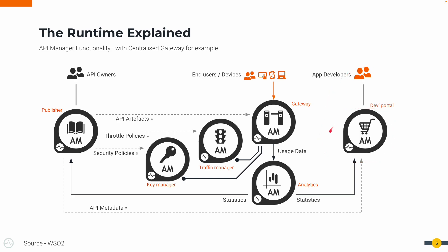Application developers will come to the Developer Portal, see the published APIs, go through them, pick the relevant ones, try them out, and finally integrate the API with their application. Once the APIs are integrated with the application, end users will start consuming the API — requests will come to the Gateway. The Gateway will talk to the Key Manager to see whether it's a valid request and whether the request carries a valid token. Once the security conditions are checked, it will consult the Traffic Manager to see whether it's violating any throttling policies. If all is good, it will send the request all the way to the backend, at the same time publishing usage data to the analytics component.